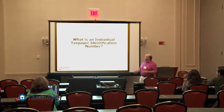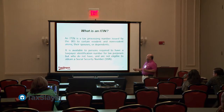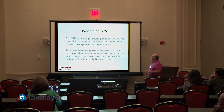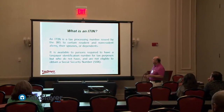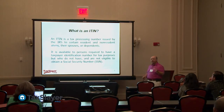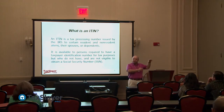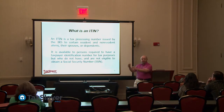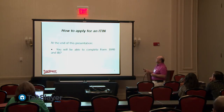What is an ITIN? The individual taxpayer identification number is a tax processing number issued by the IRS to certain resident and non-resident aliens, their spouses, or their kids. It is available to persons required to have a taxpayer identification number for tax purposes but who do not have and are not eligible to obtain a Social Security number. The IRS doesn't care what your status is — if you owe money, they want it.